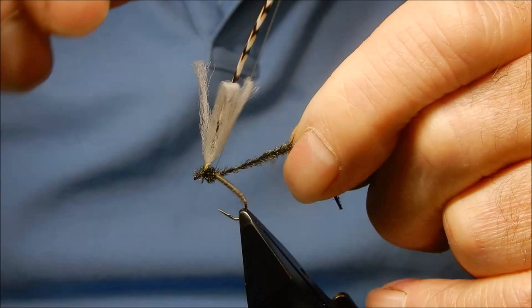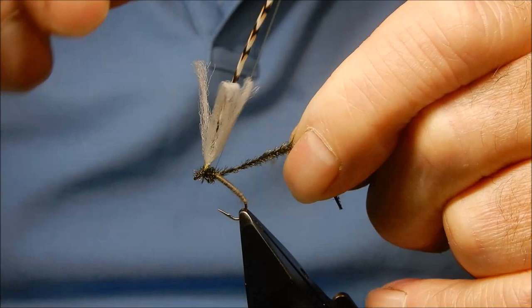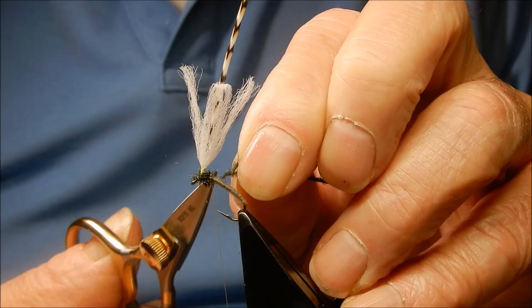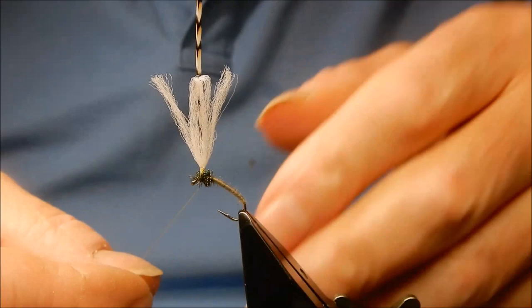I'm going to wrap the thread through it just to give it a bit of strength. Snip that off. I want to make sure the thread now is at the back, right at the back of the post.